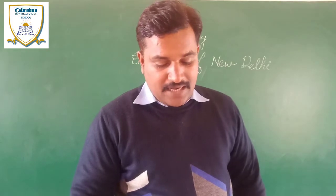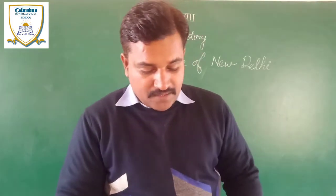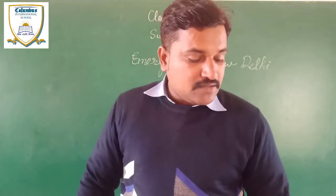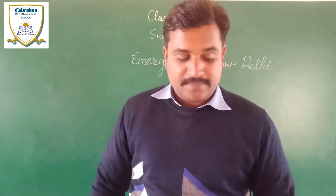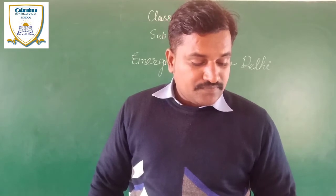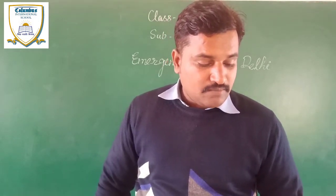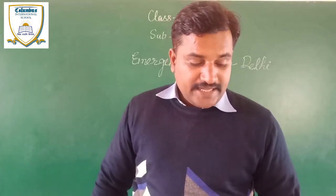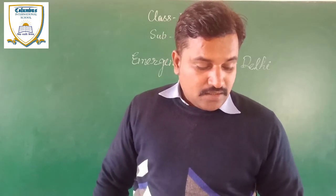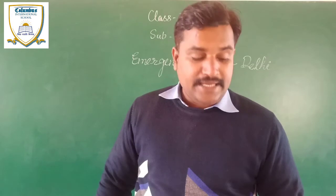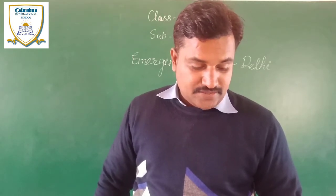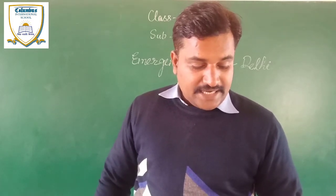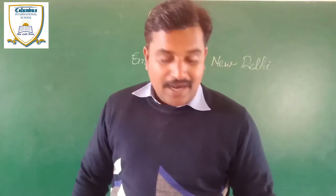At this point of time, Calcutta was the capital of the company in India, and Delhi was not among the most significant administrative and commercial centers. The company allowed the Mughal emperors to continue living in the palace complex in the Red Fort. In the first half of the 19th century, racial differences were not steep in Delhi like in the Presidency cities, and the British, instead of living in separate white towns, resided along with the wealthy Indians in one city.